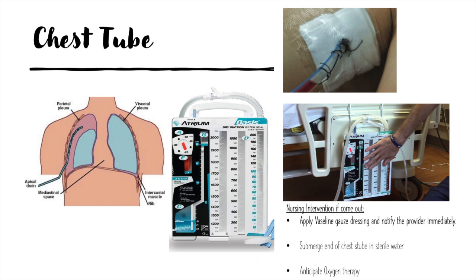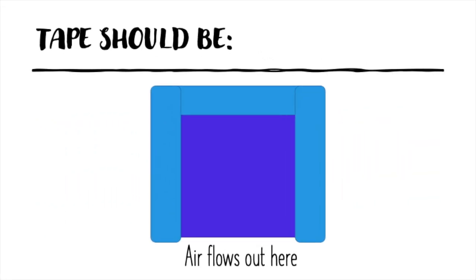Here is a chest tube. When covering the site of the chest tube — such as when it dislodges or comes out of place — tape only three sides. Taping all four sides can cause further complications. Maintain the chest tube drainage system to gravity, as seen attached to the bed in this image; this allows fluid to leak downward and out of the lung in a hemothorax. Here's a close-up of how to tape the dressing — three sides covered, one side open, which allows air to flow out.